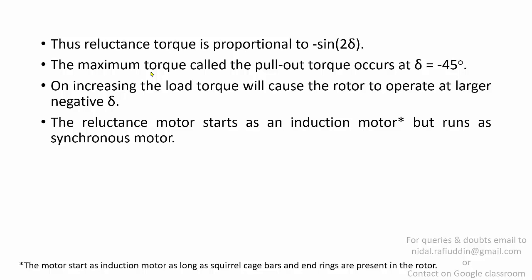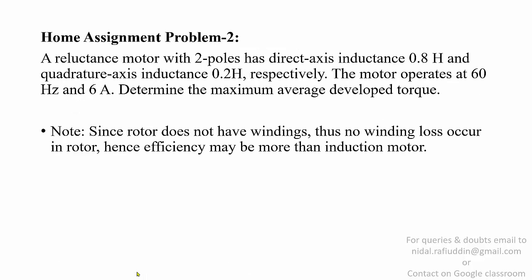The reluctance motor starts as an induction motor but runs as a synchronous motor. The motor starts as an induction motor as long as squirrel cage bars and end rings are present in the rotor — this applies to the synchronous reluctance motor. For the home assignment: a reluctance motor with two poles has direct-axis inductance Ld = 0.8 H and quadrature-axis inductance Lq = 0.2 H. The motor operates at 60 Hz and 6 A. Determine the maximum average developed torque. Note that since the rotor does not have windings, no winding loss occurs in the rotor, hence efficiency may be higher than that of an induction motor.